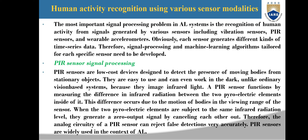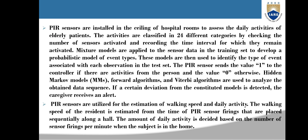PIR Sensor Signal Processing: PIR sensors are low-cost devices designed to detect the presence of moving bodies from stationary objects. They are easy to use and work in the dark, unlike ordinary vision-based systems. A PIR system functions by measuring the difference in infrared radiation between the two pyroelectric elements inside it. This difference occurs due to the motion of bodies in the viewing range of the sensor. When the two pyroelectric elements are subject to the same infrared radiation level, they generate a zero output signal by canceling each other out. Therefore, the analog circuit of a PIR sensor can reject false detections very accurately. PIR sensors are widely used in the context of AAL.